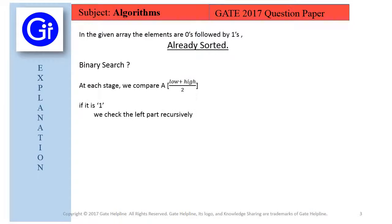So if it is 1, we check the left part recursively, and if it is 0, we check the right part of the array recursively.